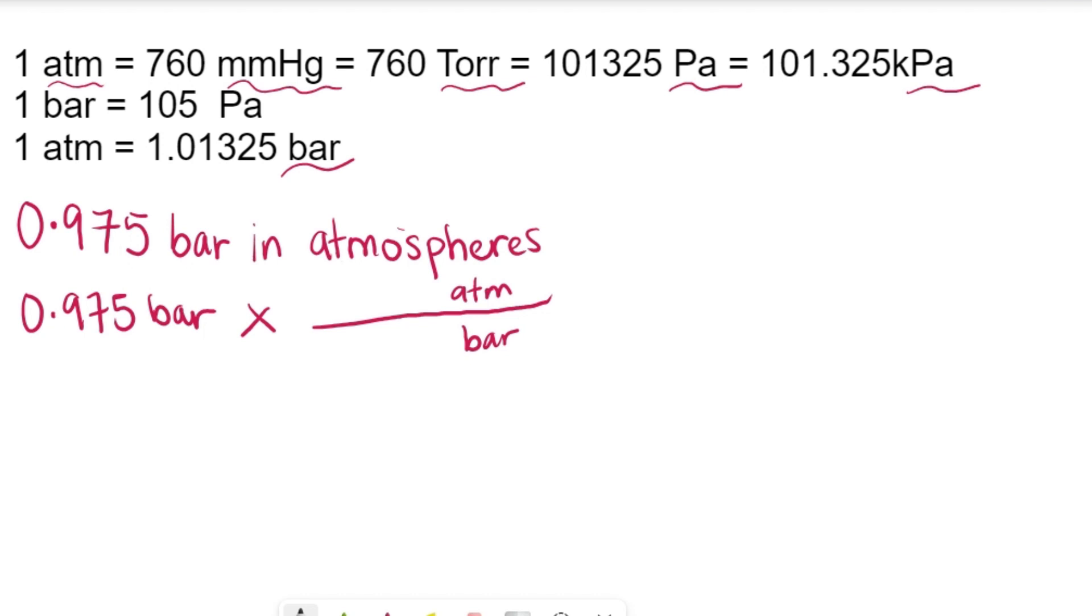It has to be on the numerator. So whenever we solve for it, we always have to put the unit that we want up top so that when the whole calculation is done, we have our answer in the units that we prefer, which in this case is atmospheres.